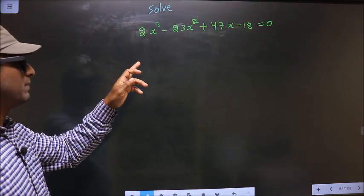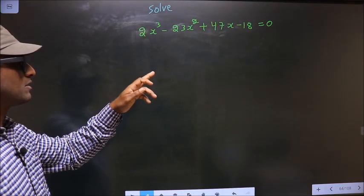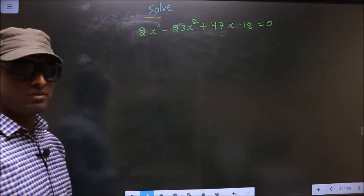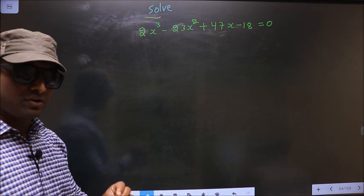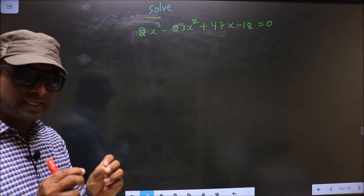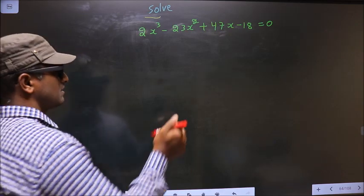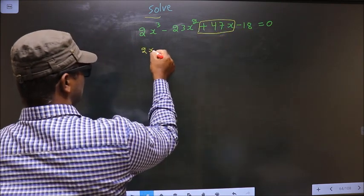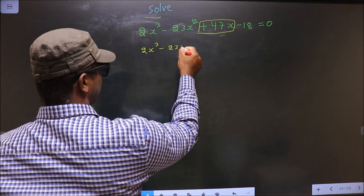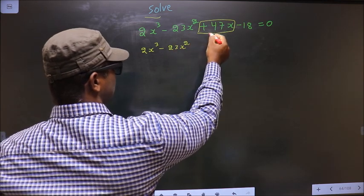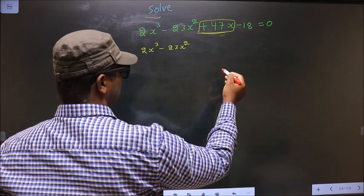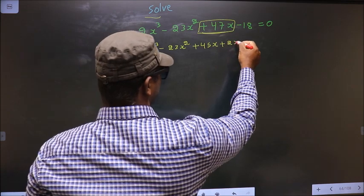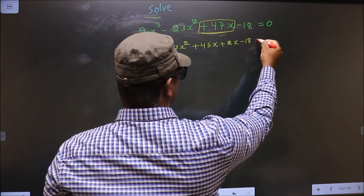Solve 2x cubed minus 23x squared plus 47x minus 18. They told us to solve, so we should find the values of x. For that, we have to change the x term, that is plus 47x. So 2x cubed minus 23x squared — in place of plus 47x, I write plus 45x plus 2x minus 18 equal to 0.